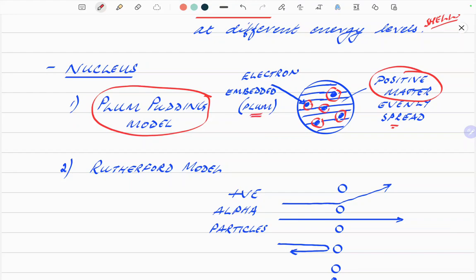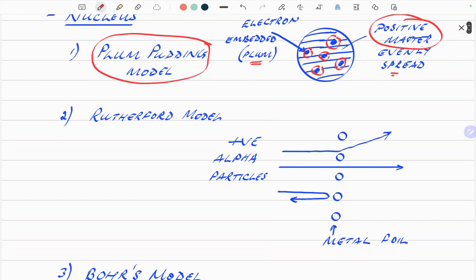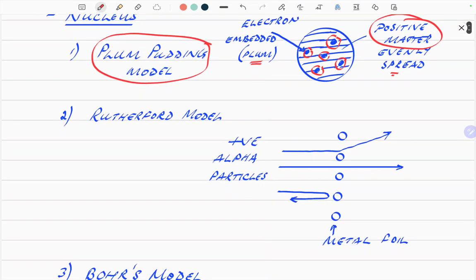And these were thought to be like plums in a plum pudding. Now, I've never tried a plum pudding, and I'm not sure if they put them with the plums in or the seeds in. If anybody knows, put it in the comments. The development of that, as people got more information, was the Rutherford model.